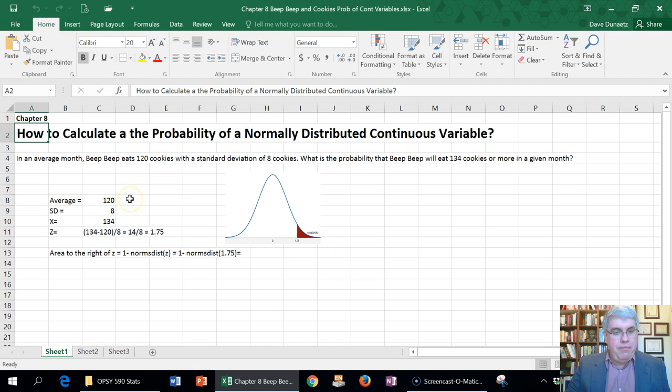So we know that the mean is 120, the average, the standard deviation is eight, and the X that we're interested in, where the line is, this cutoff line that we're going to make, is 134.